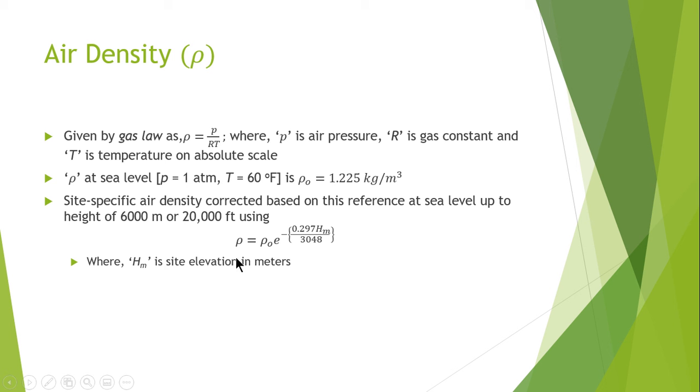Using the relation rho equals rho naught, that is the density at sea level, multiplied by E power minus 0.297 HM divided by 3048, where HM is the site elevation measured in meters. The site specific temperature in centigrade is given by T equals 15.5 minus 119.83 HM divided by 3048.